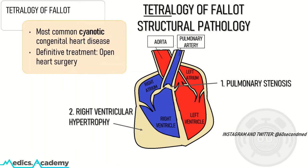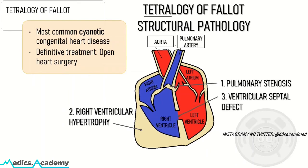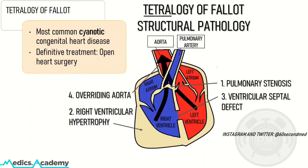Number two: right ventricular hypertrophy — thickening of the right ventricular muscular wall. Number three: a ventricular septal defect between the right ventricle and the left ventricle. And number four: an overriding aorta, where both the right ventricle and the left ventricle flow directly into the aorta.